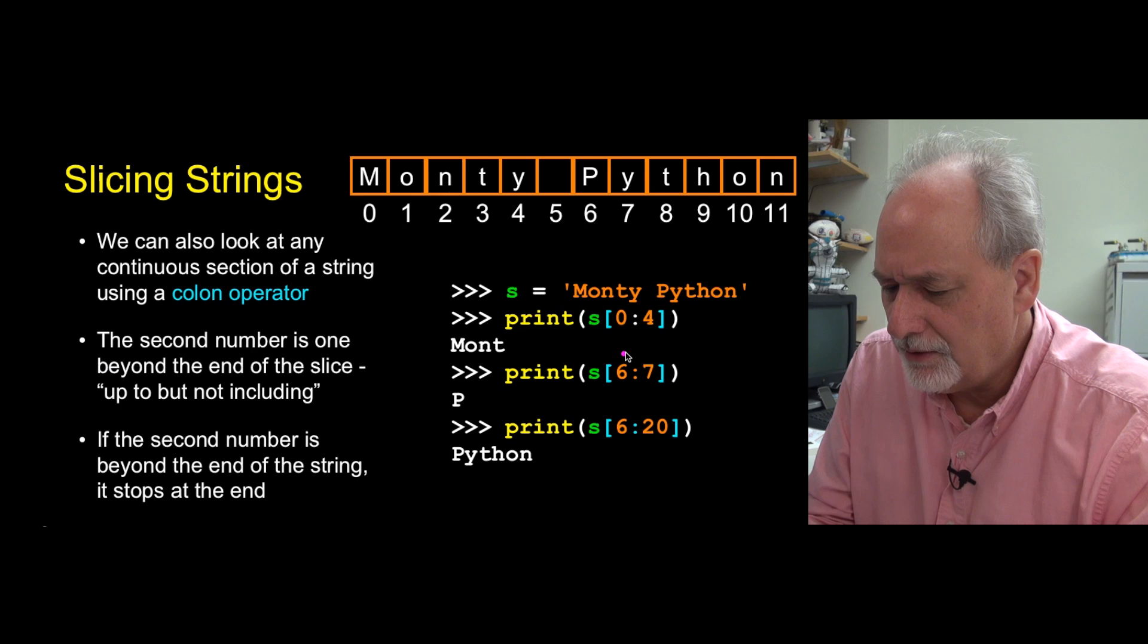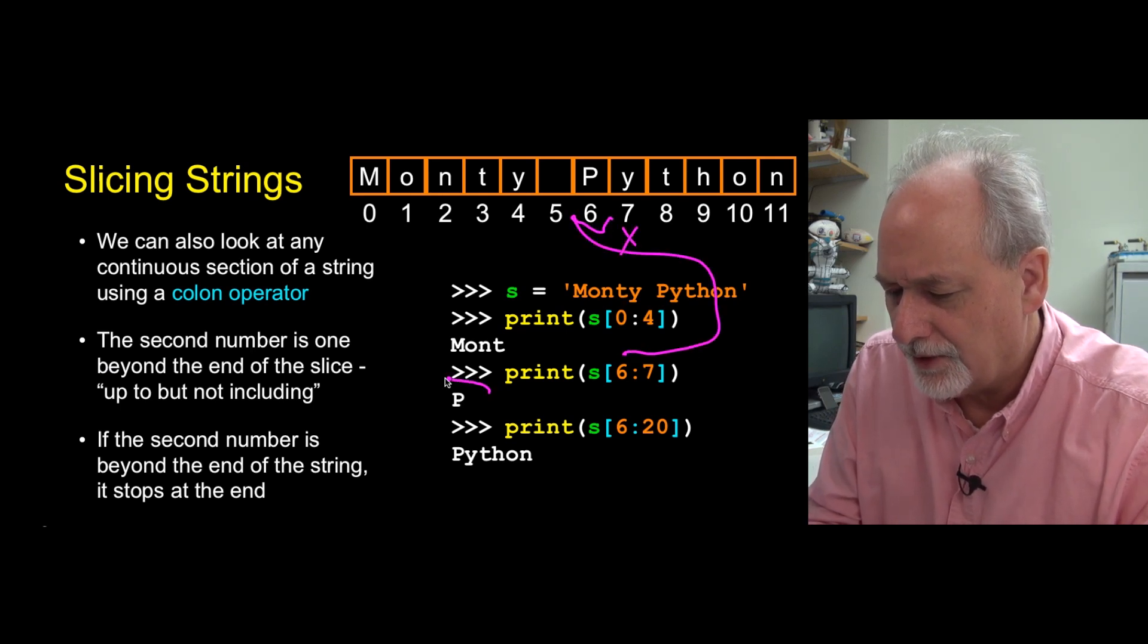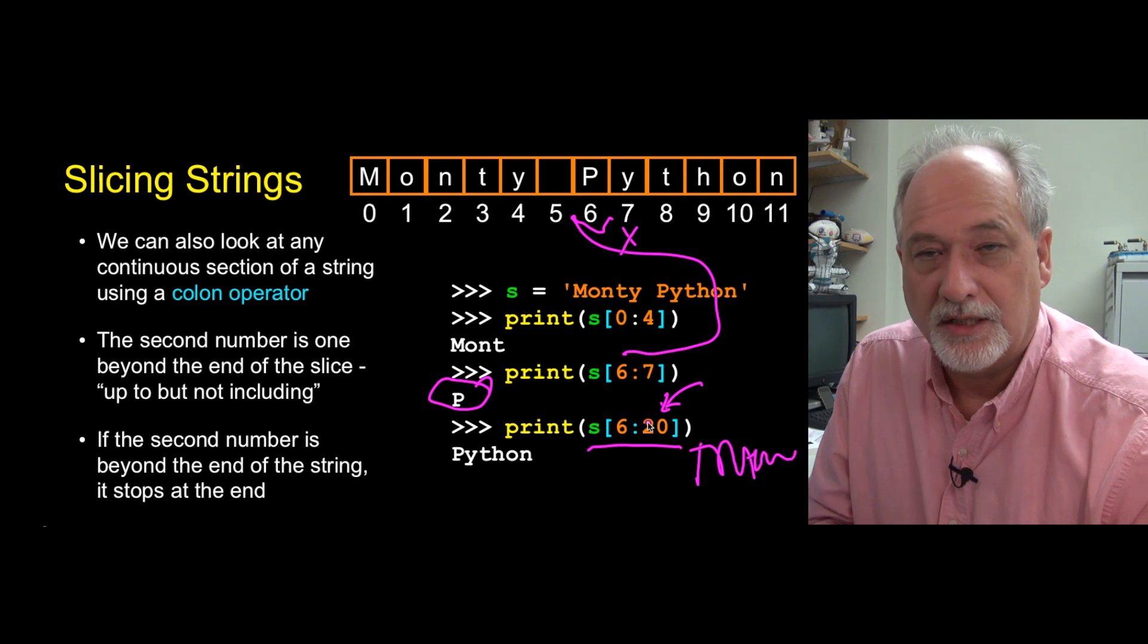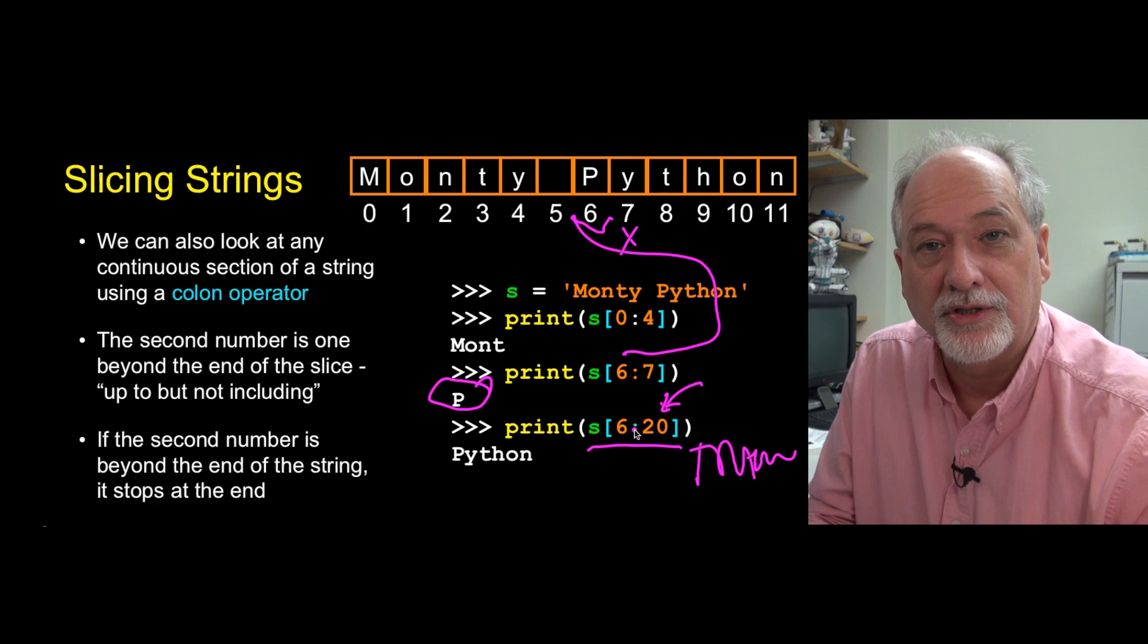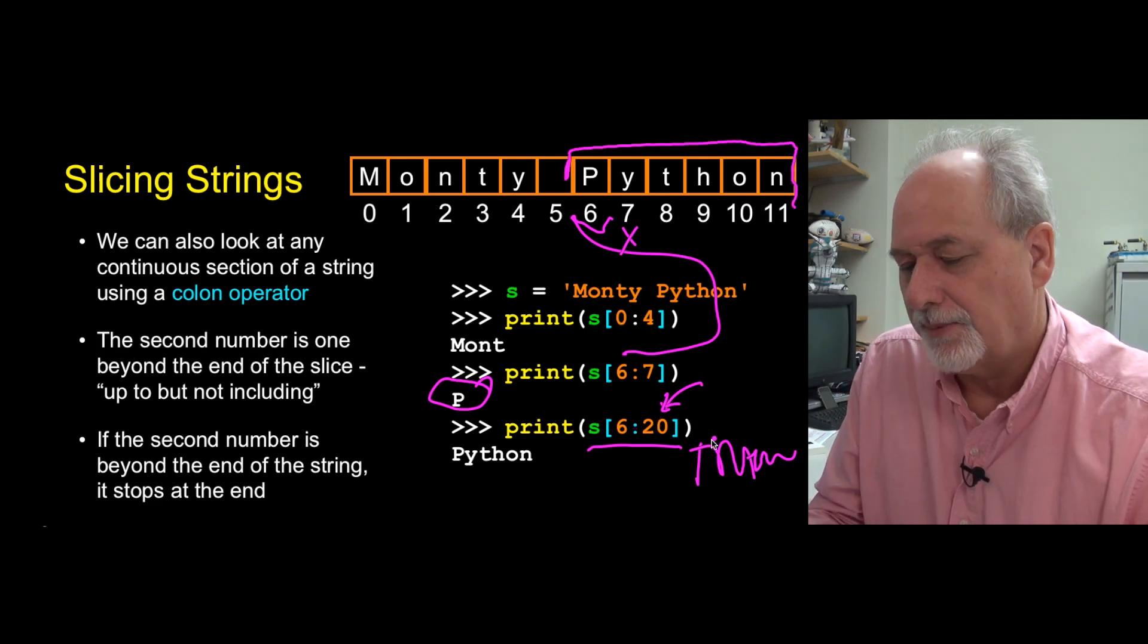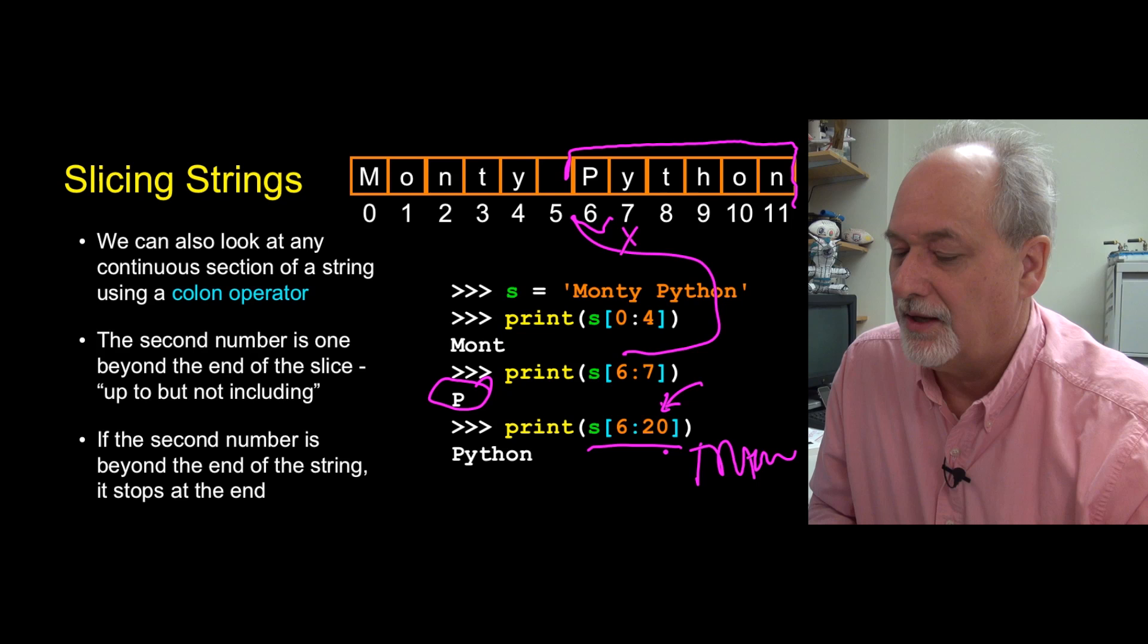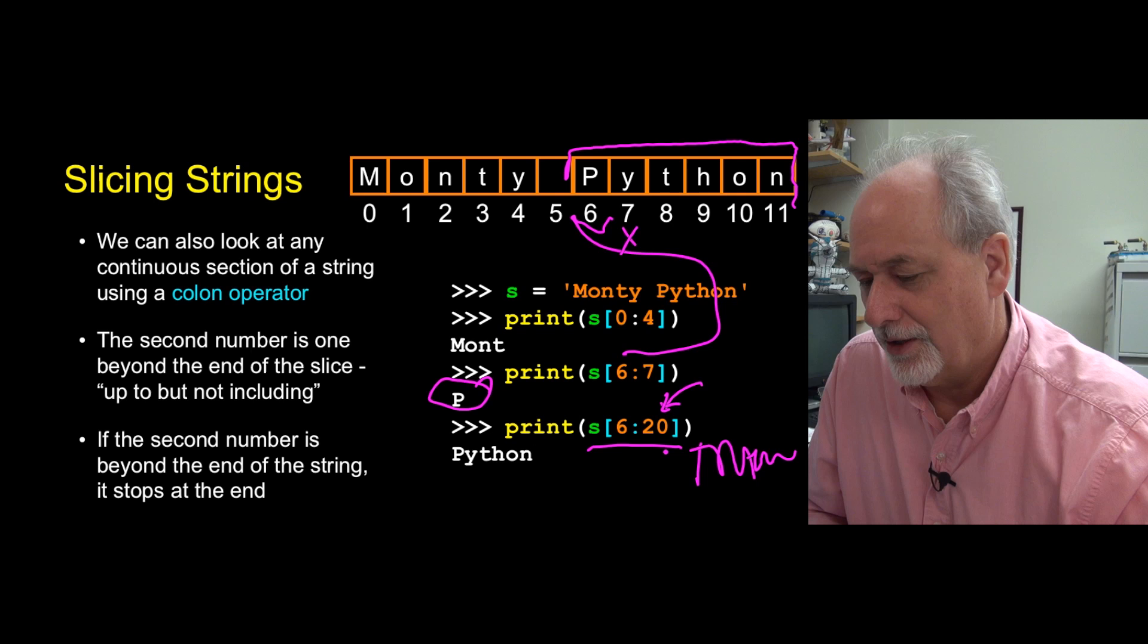Six through seven ends up being starting at six, up to but not including seven, so that's why we only get the P out. Now one thing that Python is pretty nice about is it's not going to give you a traceback. We might expect that six through 20, well there's no 20 characters, but it's like, ah, that's okay. We'll just let you stop at the end. Start at six and go all the way to the end. No traceback. It's almost disappointing sometimes when Python doesn't traceback.